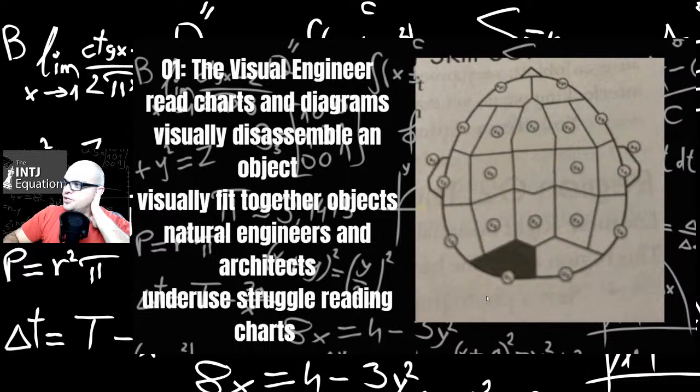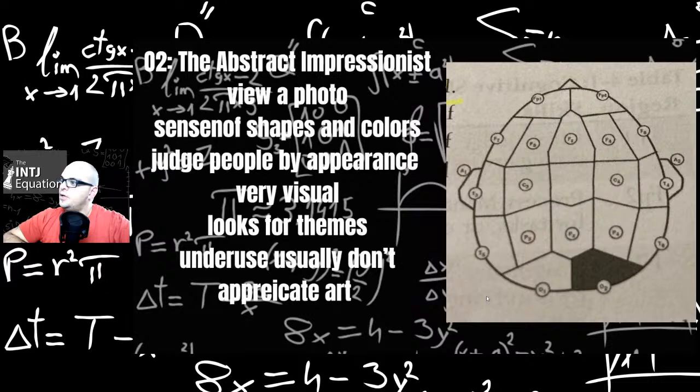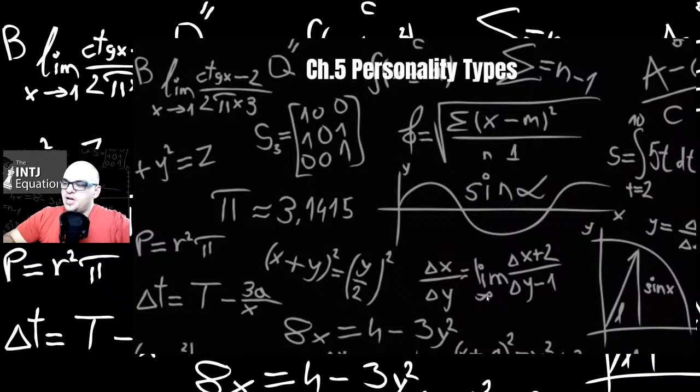O1, the visual engineer: reads charts and diagrams, visually disassemble an object, visually fit together objects. Natural engineers and architects. Underused struggle reading charts. So probably people with low Te, Te in a shadow possibly struggle with this. O2, the abstract impressionist: view a video, sense of shapes and colors, judge people by appearance, very visual, looks for themes. Underused usually doesn't appreciate art.